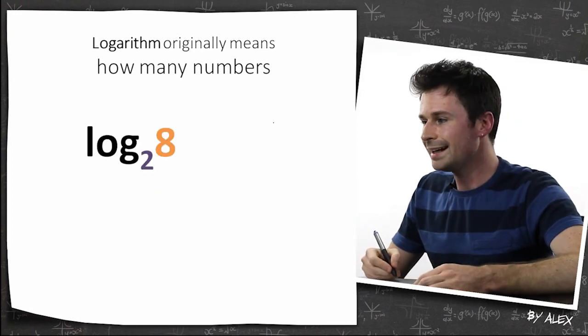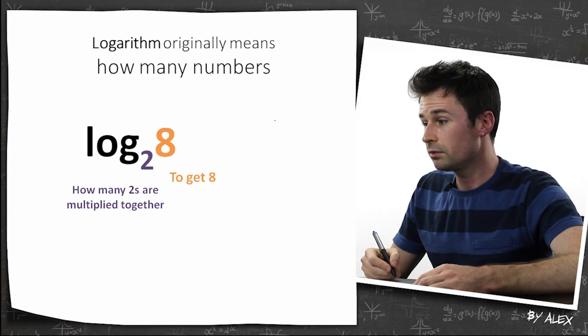So you've got log base 2 of 8. How many 2s are multiplied together to get 8? Well, we look at it. There's 3.